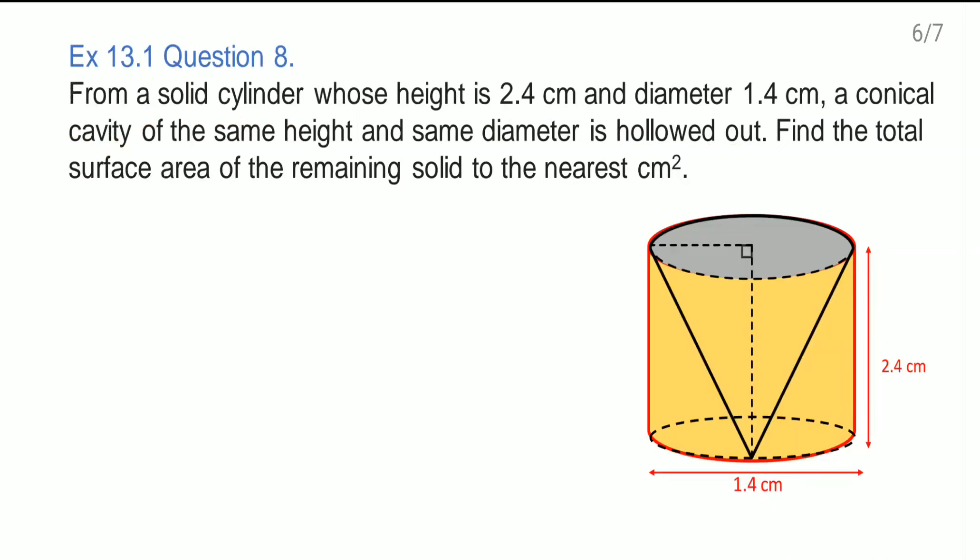Let us see the figure here. Now a cylinder is there, from that we have taken out this conical portion. This one we have taken out. Now as this conical portion is taken out, imagine that solid without this conical portion.